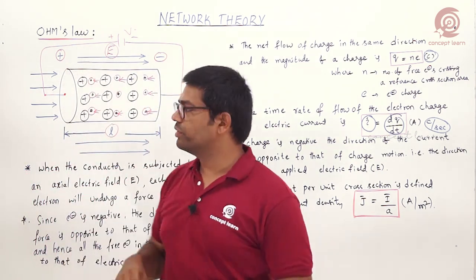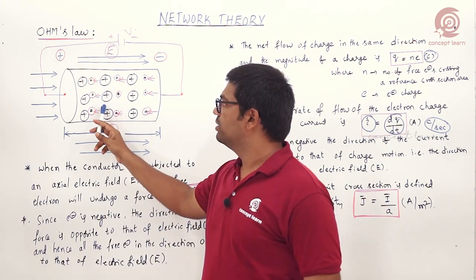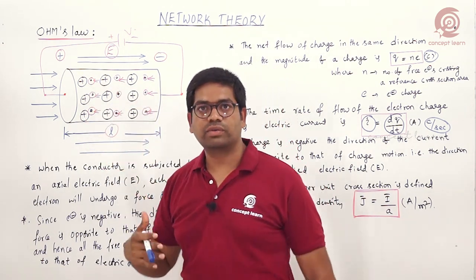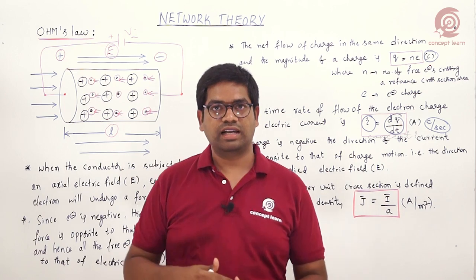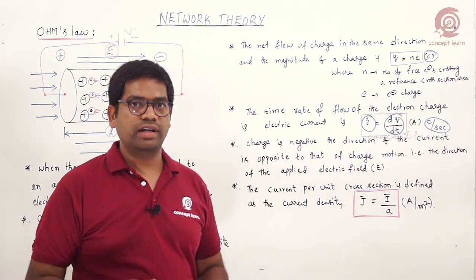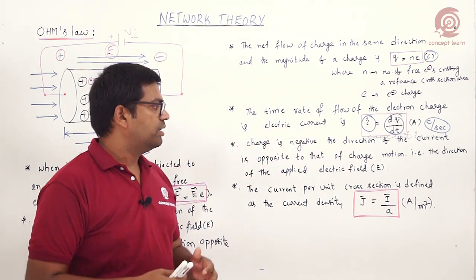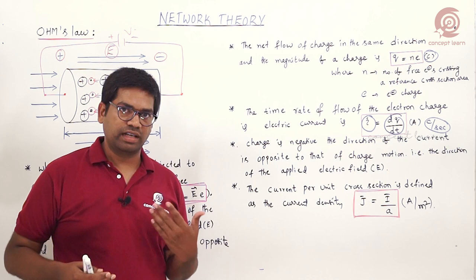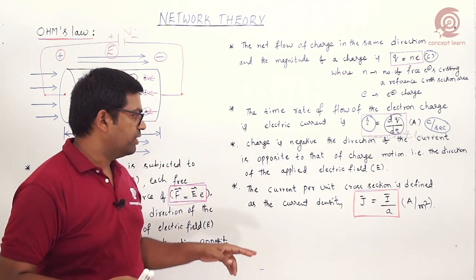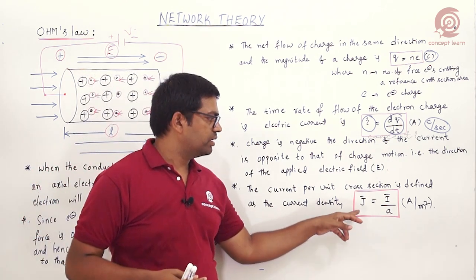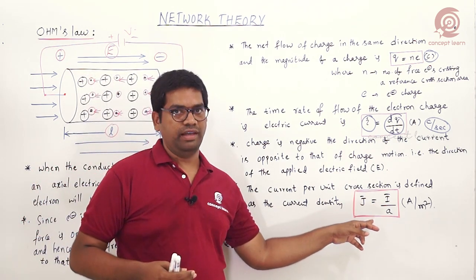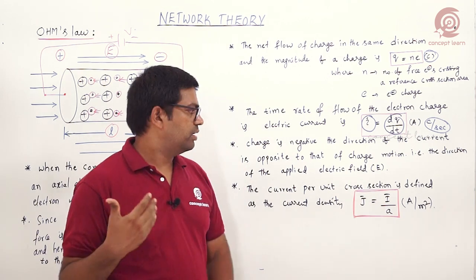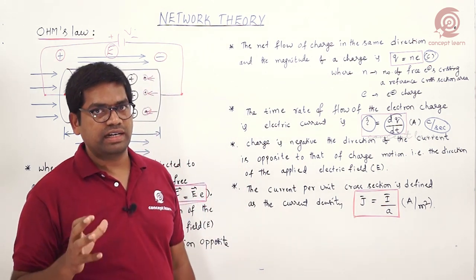When current is flowing through a cross-section area based on the applied field, we define current density. Current density is current per unit cross-section area, indicated as J = I/A, with units of amperes per meter squared.